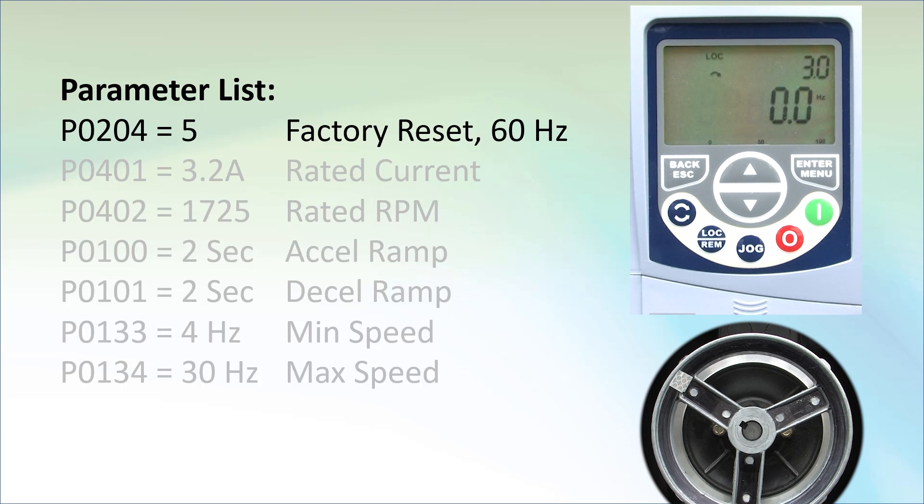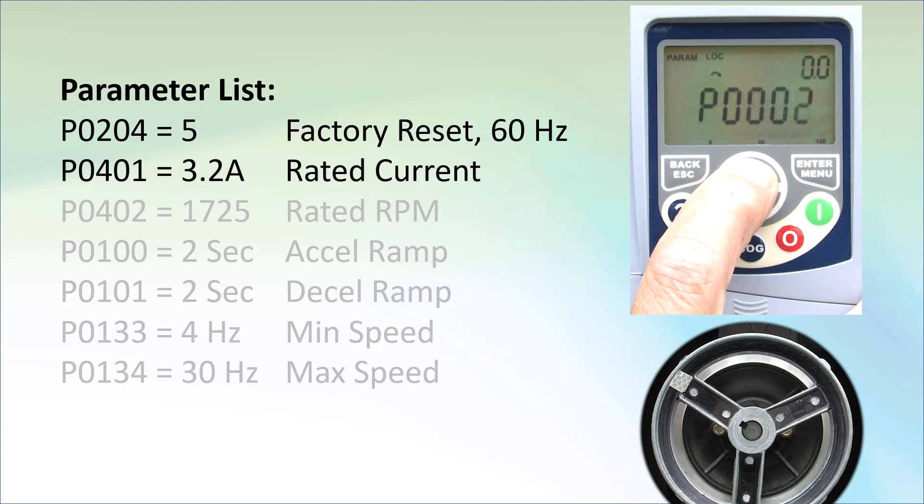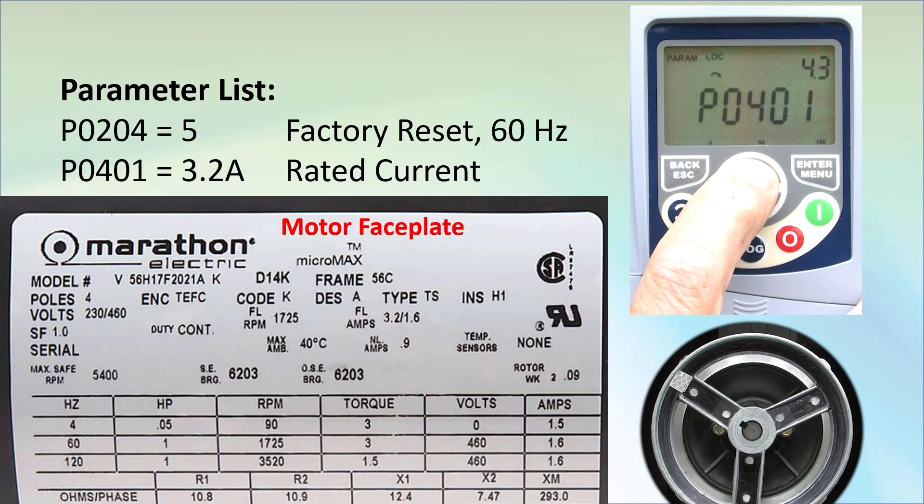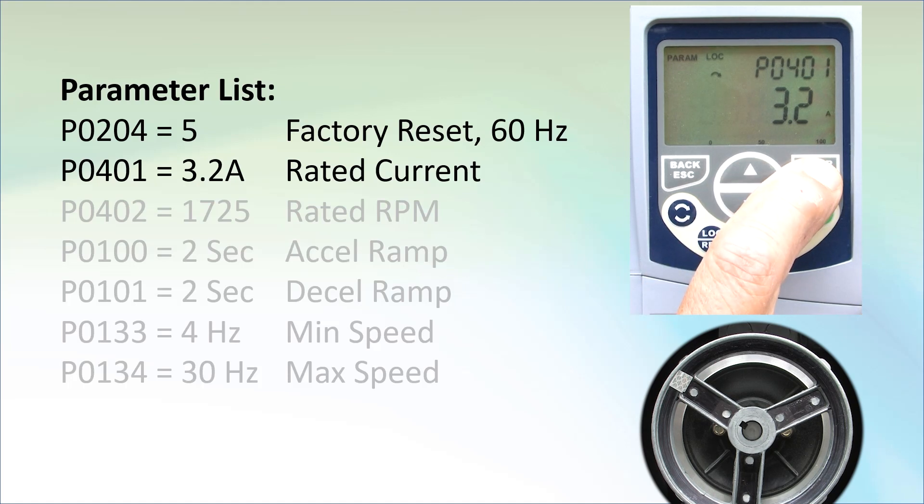Let's configure our motor. Enter to bring up the parameters menu and press enter again to select the parameters group. Scroll to parameter 401 which is the motor's rated current. We see it is currently 4.3 amps. Our motor's faceplate tells us ours is 3.2 amps at 240 volts. So we enter into the parameter, change it to 3.2 and enter to accept.